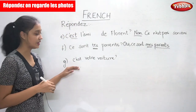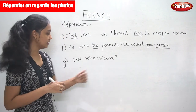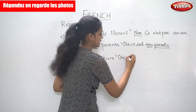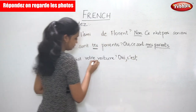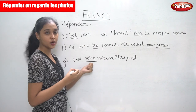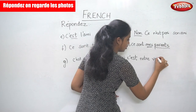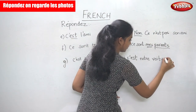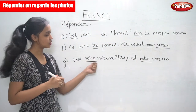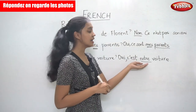The last one: 'C'est votre voiture' — it is your car. We answer 'Oui.' 'C'est' is written as it is. Second person plural becomes first person plural, so 'votre' becomes 'notre.' 'C'est notre voiture' — it is our car.